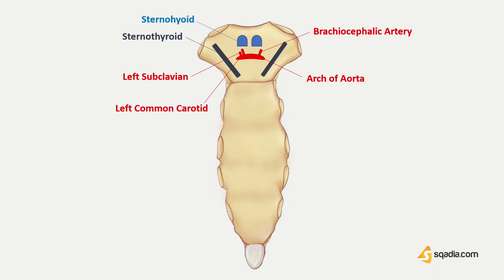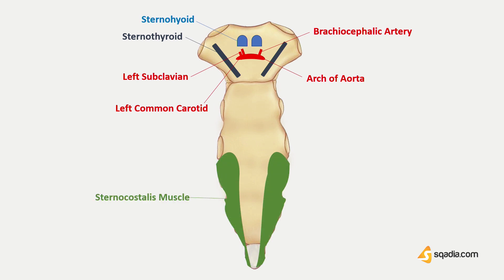Posteriorly, we have also the attachments to the sternocostalis muscle, which is forming the legs and the tail of the alien previously discussed. The posterior surface of the xiphoid gives attachment to the slips of the diaphragm.